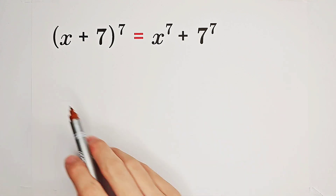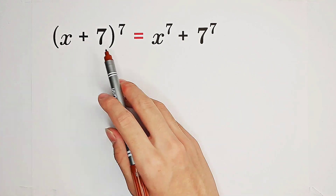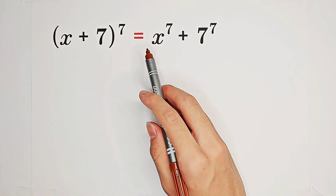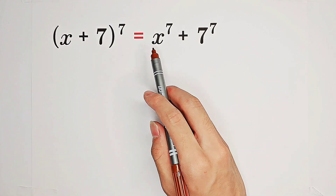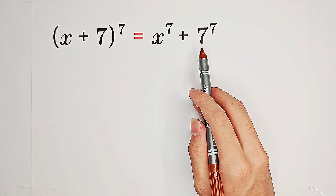Solve for x such that (x + 7) to the power of 7 equals x to the power of 7 plus 7 to the power of 7.